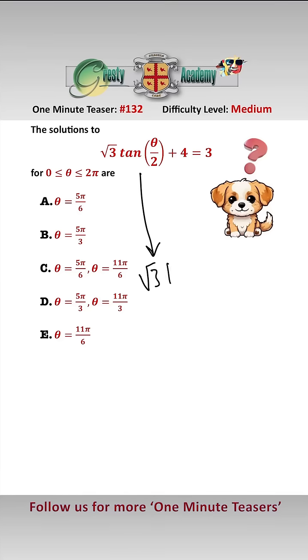Simplifying this, we have that root 3 tan of theta over 2 equals minus 1. Therefore, tan of theta over 2 equals minus 1 over root 3.